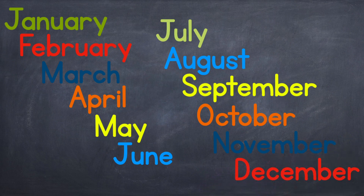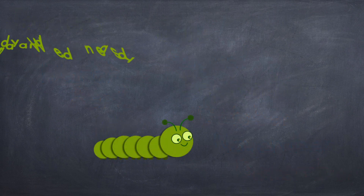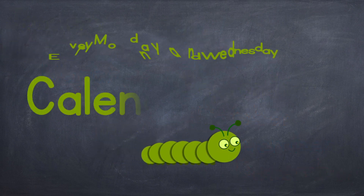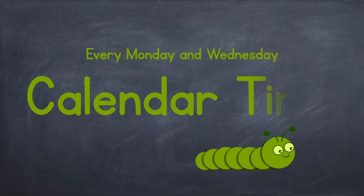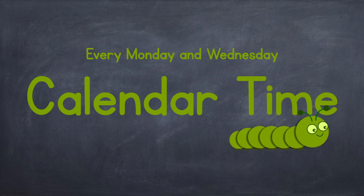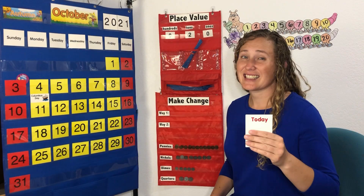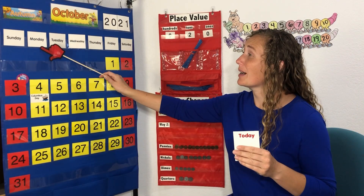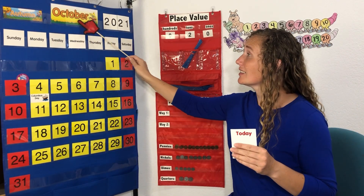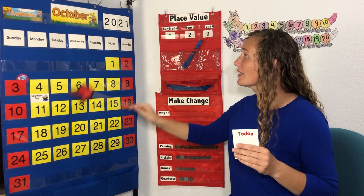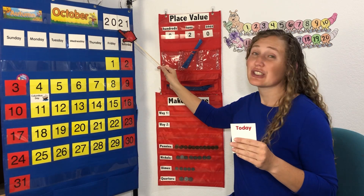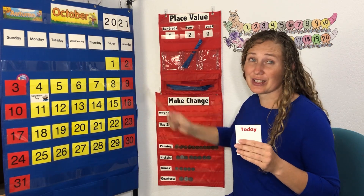Go check the calendar and you can say what month it is and the day. It's calendar time! Today is Monday, October 25th, 2021.